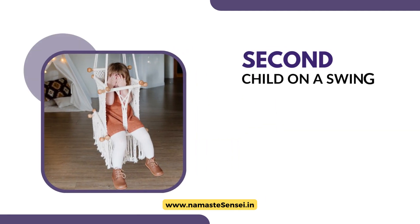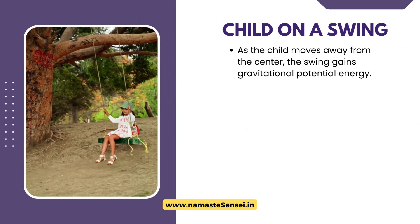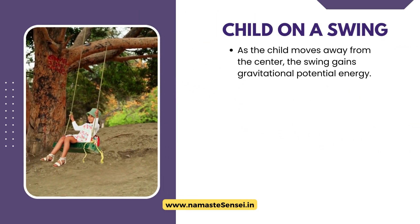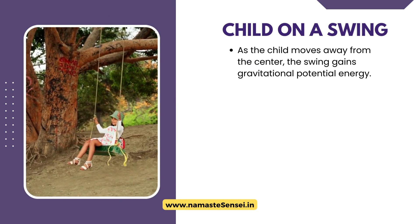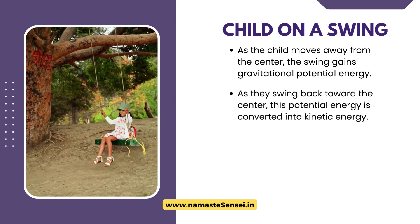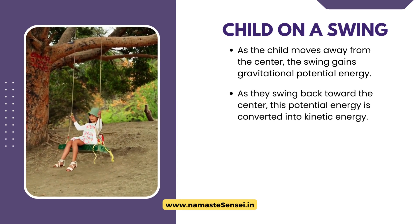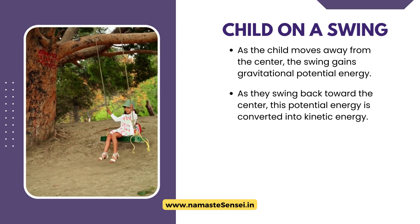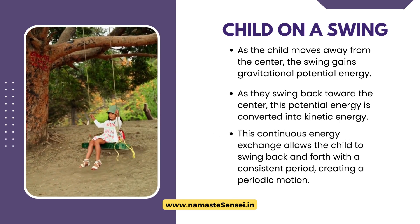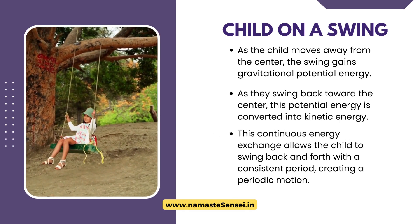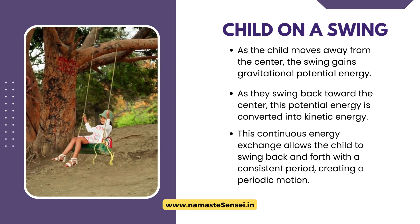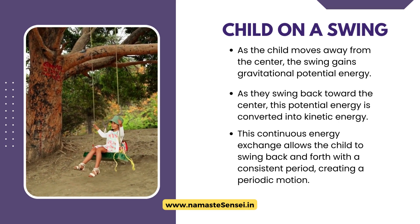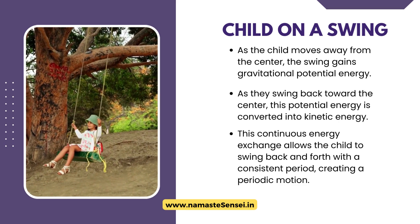Second, Child on a Swing. As the child moves away from the center, the swing gains gravitational potential energy. As they swing back toward the center, this potential energy is converted into kinetic energy. This continuous energy exchange allows the child to swing back and forth with a consistent period, creating a periodic motion.